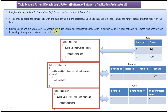It is a mapping of one business object to one table. This pattern is much closer to the Simple Domain Model design pattern. However, unlike the domain model, the Table Model design pattern does not support inheritance relationships.